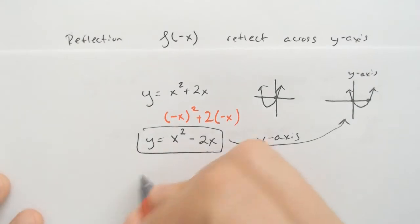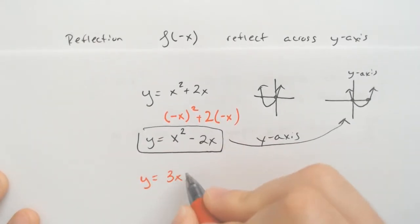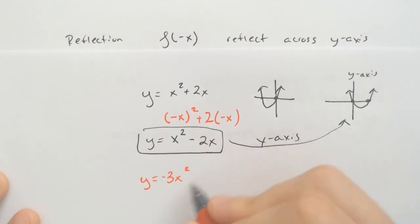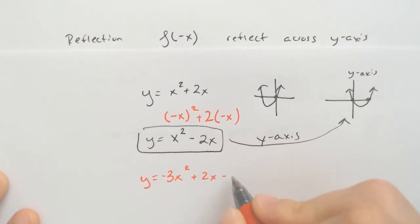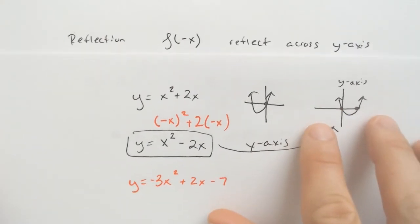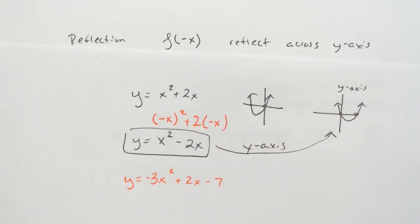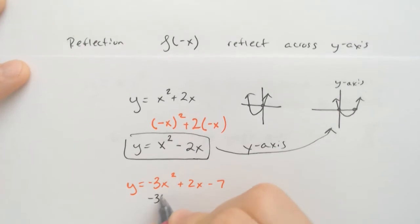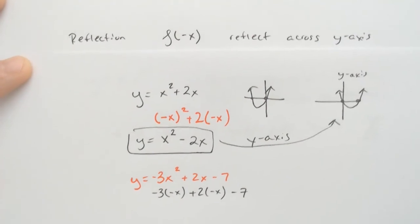Another example. Let's say we only had to have the equation. Let's do negative 3x squared plus 2x minus 7. So if I wanted to reflect across the y-axis, it would be changing this x for a negative x, changing this x for a negative x, and the 7 doesn't have anything. So it's still going to be minus 7 there.